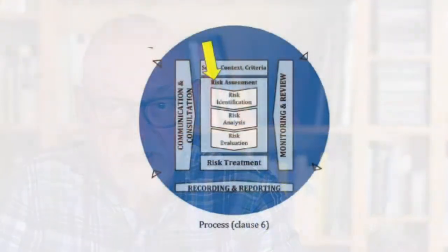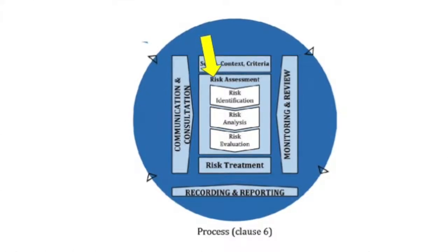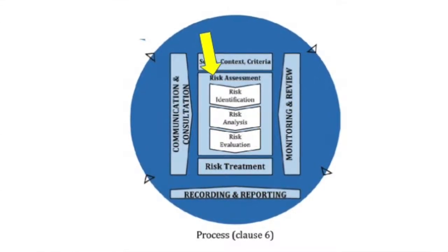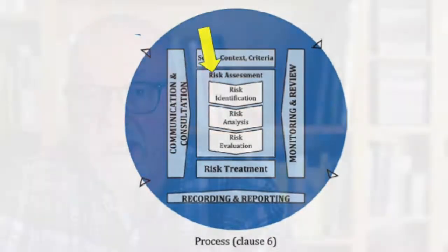Once you've decided on the scope, we get into identification, analysis, and evaluation. Once the evaluation takes place, that will lead to the actions you're going to take relative to the risks you've discovered. They'll all be relative to the context, relative to internal issues, external issues, and interested parties — they all play a part in what's important and how you evaluate your risk and come up with the decision on what to do next.